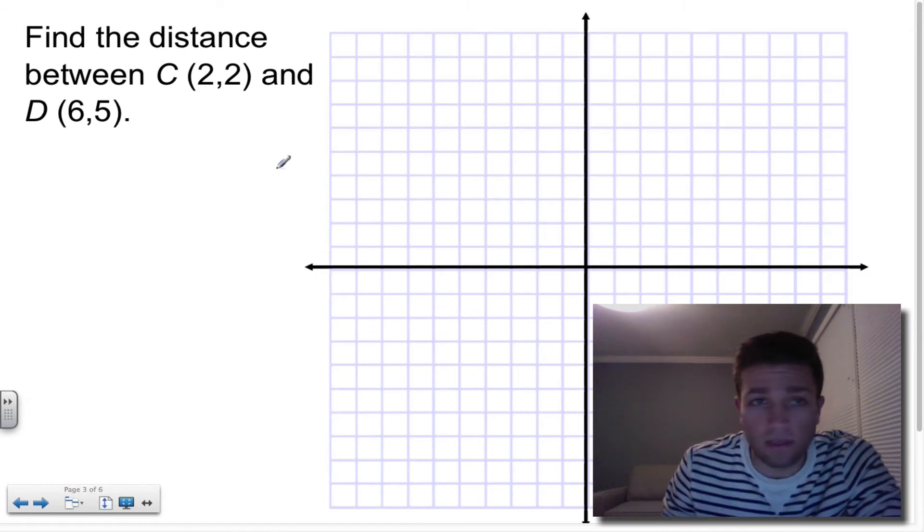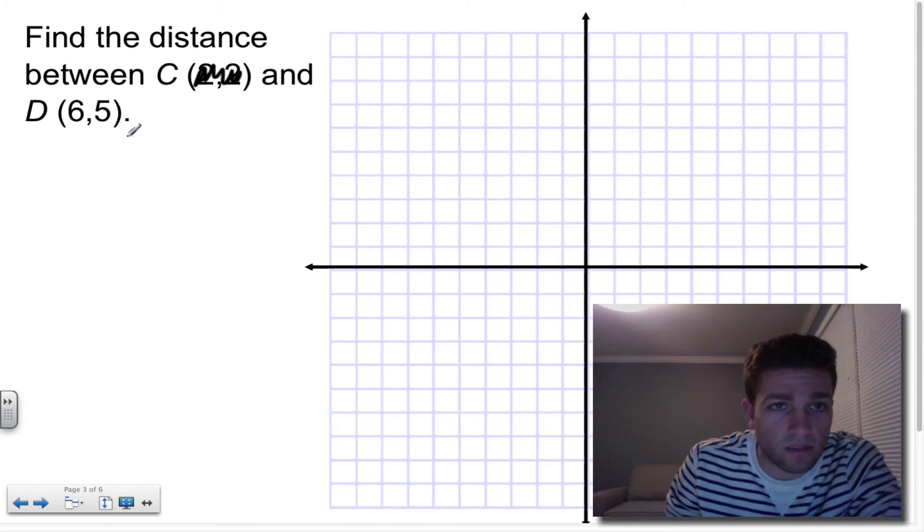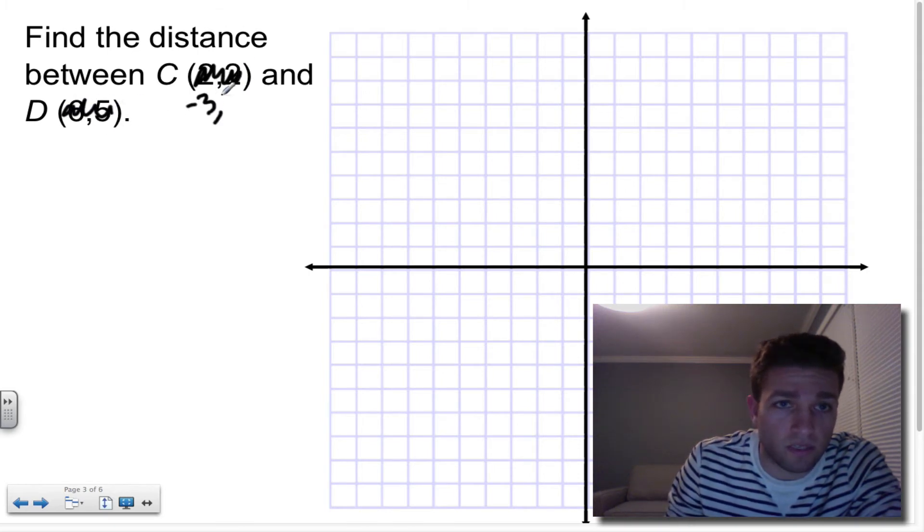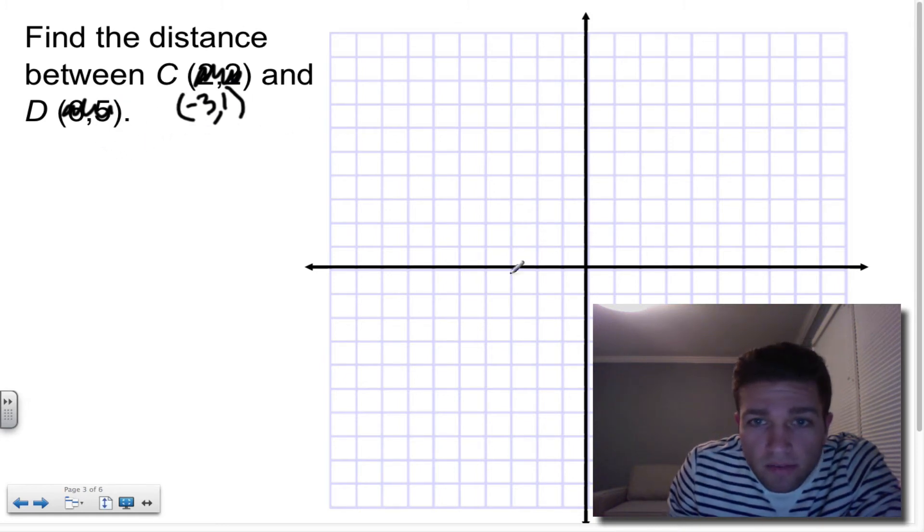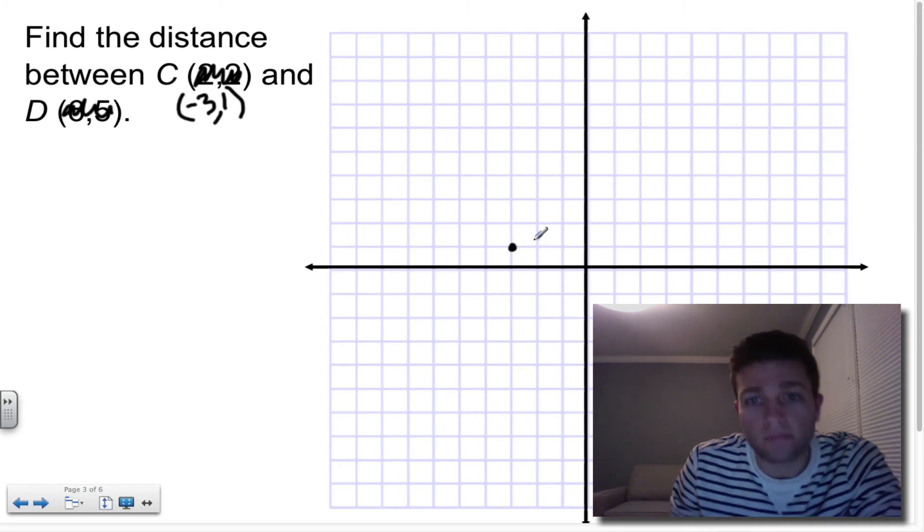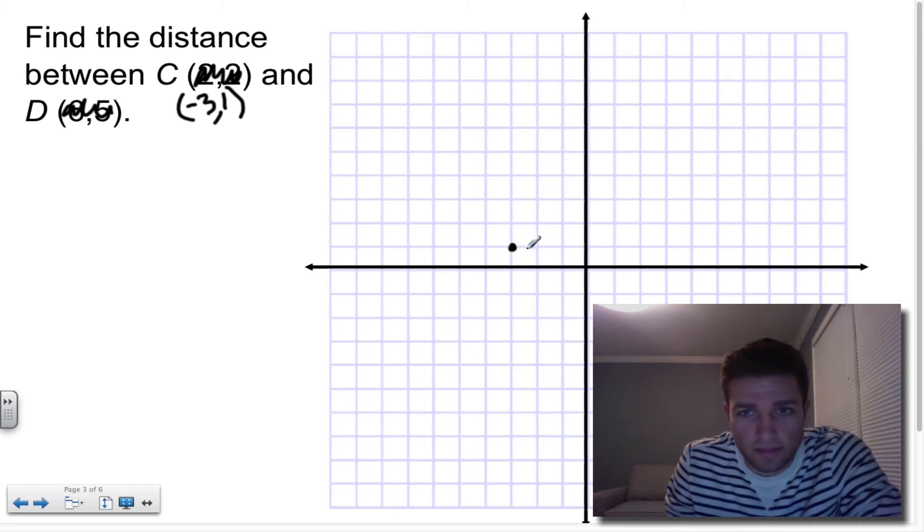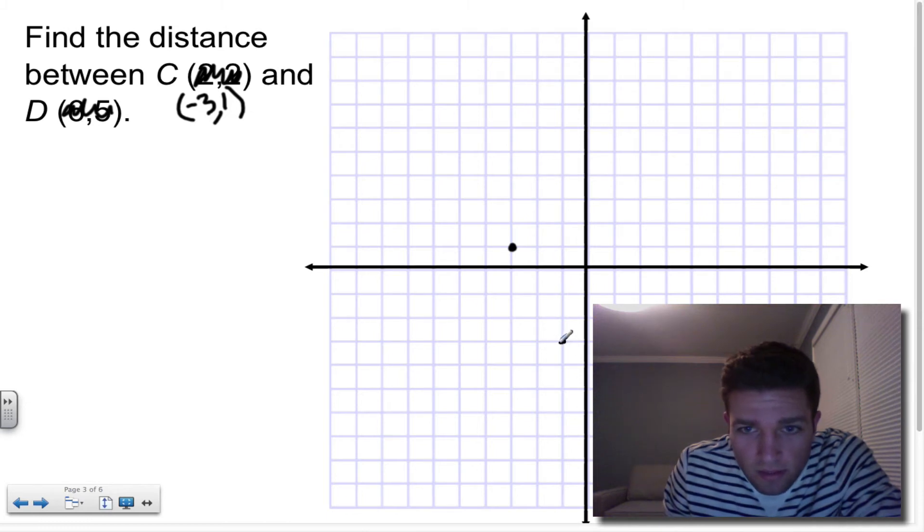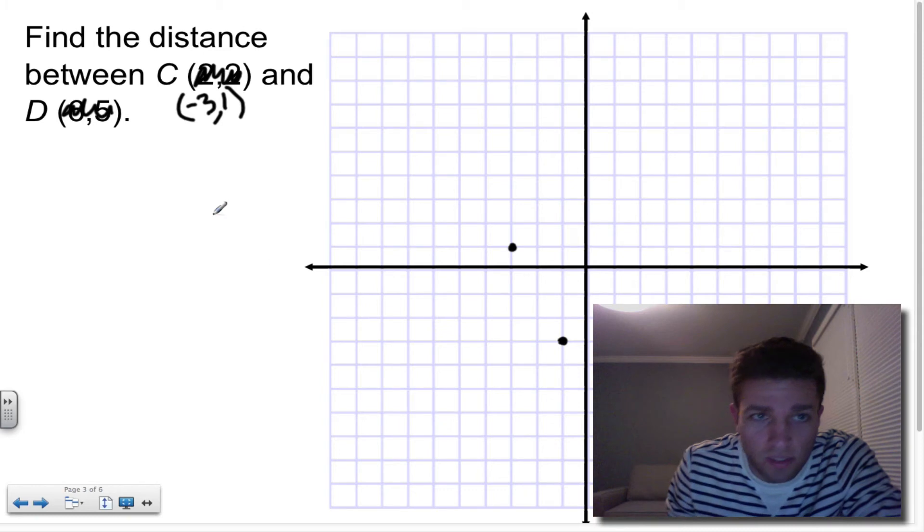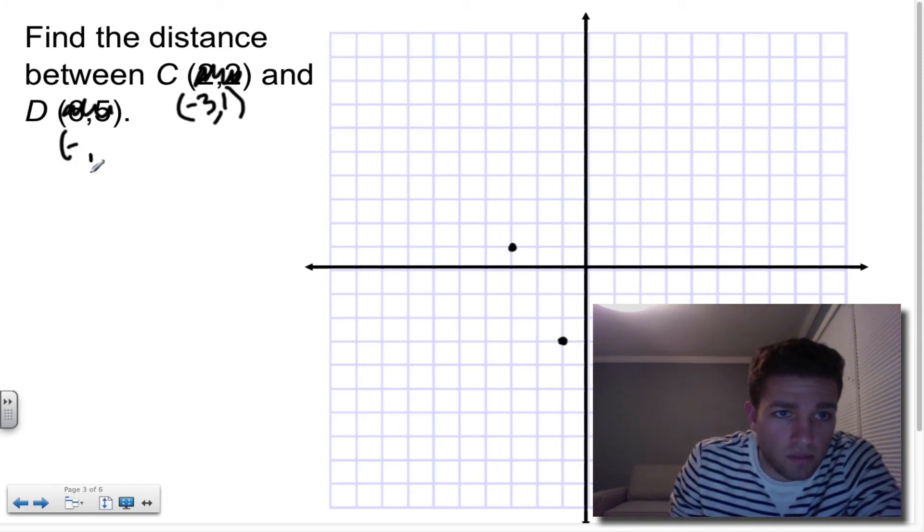Let's do one more just so you can see it. If I had a point, let's change this up. Let's do some random points. Let's do negative three, one, and let's plot that. And what if we had a point down here at negative one, negative three.